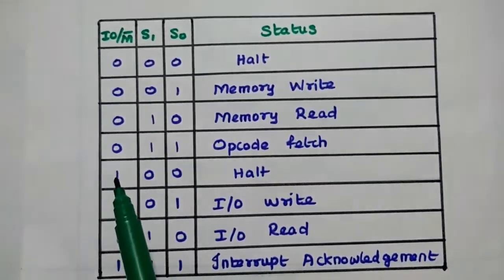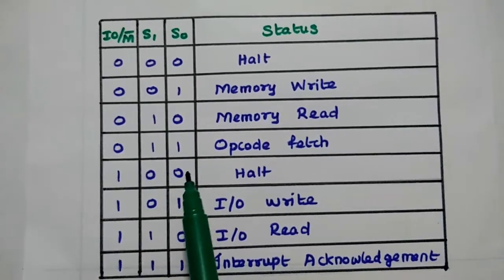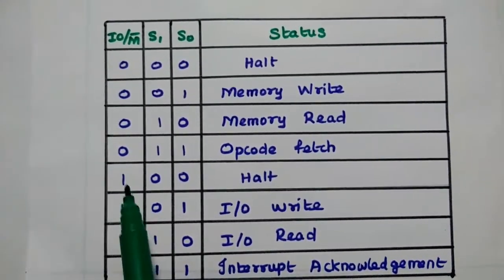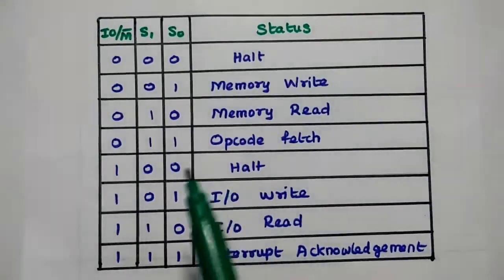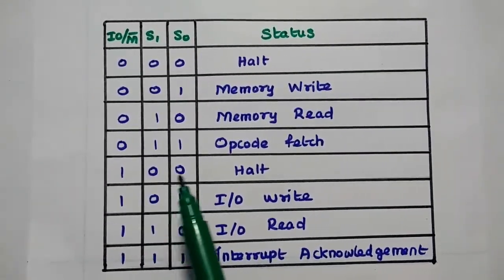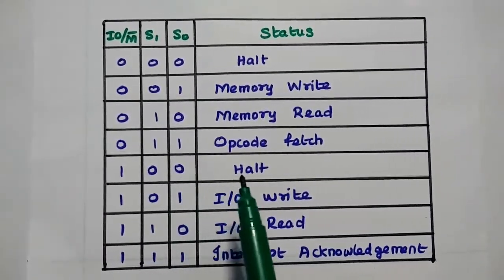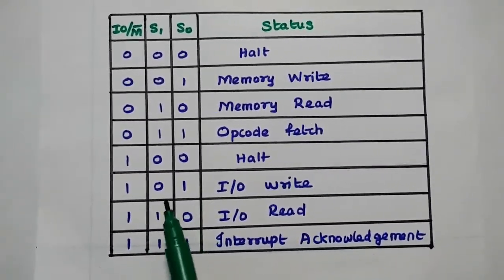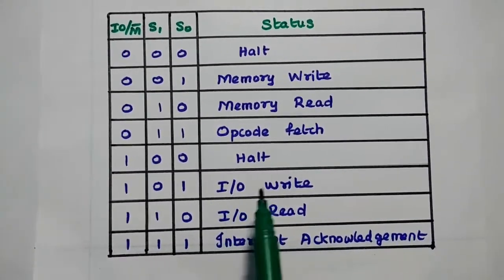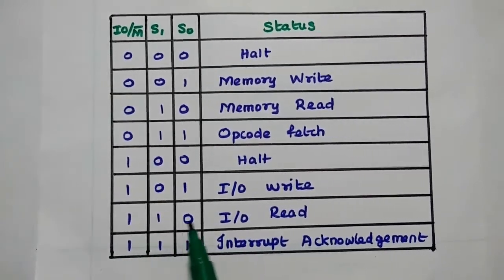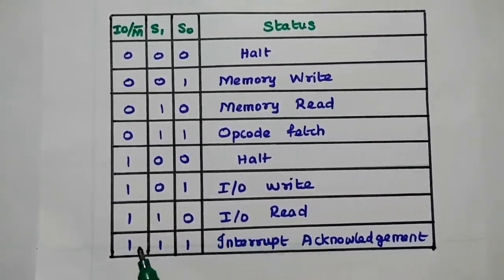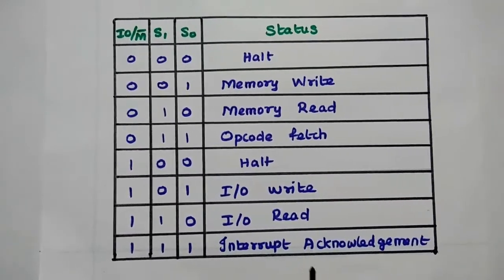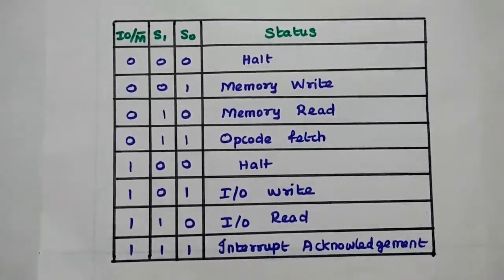When IO/M bar equals 1, it represents an input/output device operation. IO/M=1, S1=0, S0=0 means no operation. IO/M=1, S1=0, S0=1 means input/output read. IO/M=1, S1=1, S0=0 means input/output write. IO/M=1, S1=1, S0=1 means interrupt acknowledgement from the processor. These status combinations are very important.